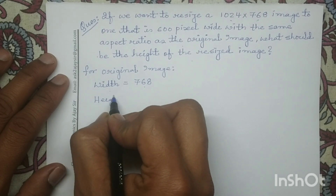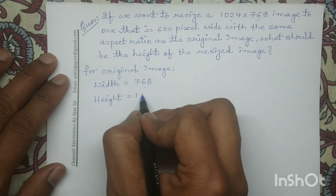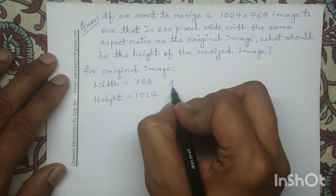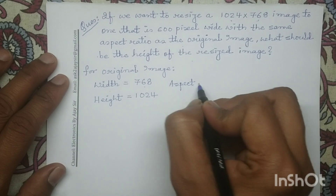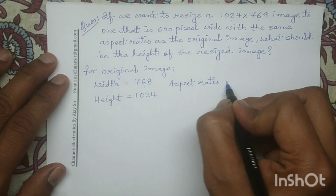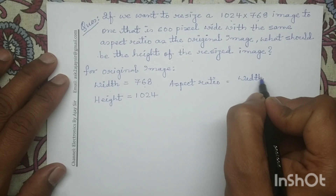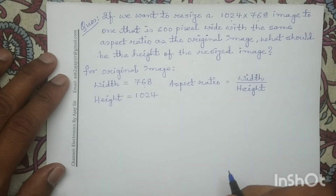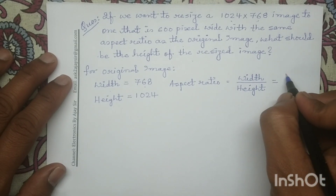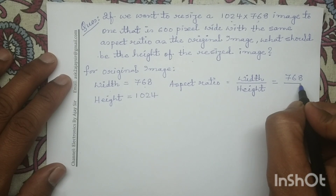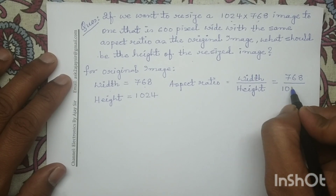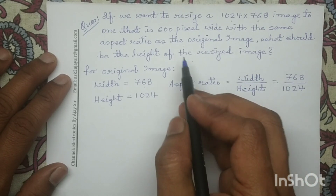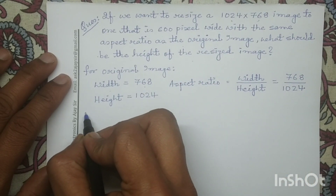The aspect ratio is equal to width upon height. So the aspect ratio of the original image is 768 divided by 1024.